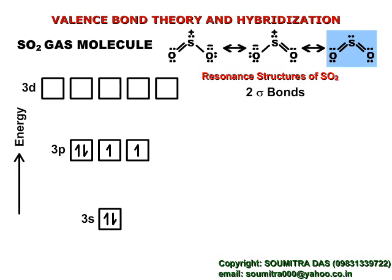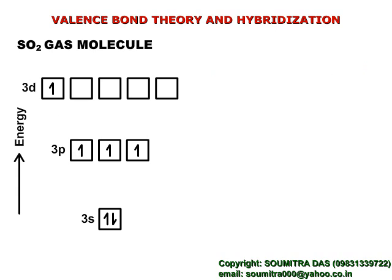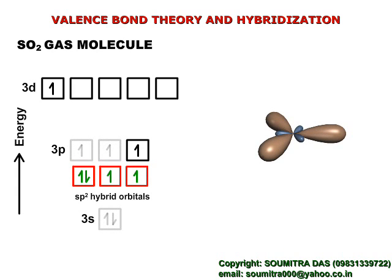Now this one has two sigma and two pi bonds. So one electron is promoted to the 3d level from the 3p level. Now this is the lone pair and these two form sigma bonds with two oxygen atoms. Therefore these three hybridize to form three sp² hybrid orbitals.